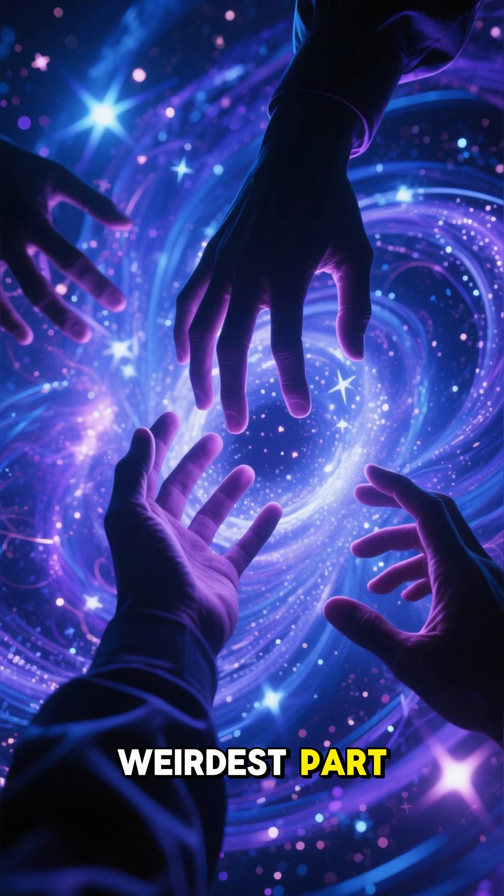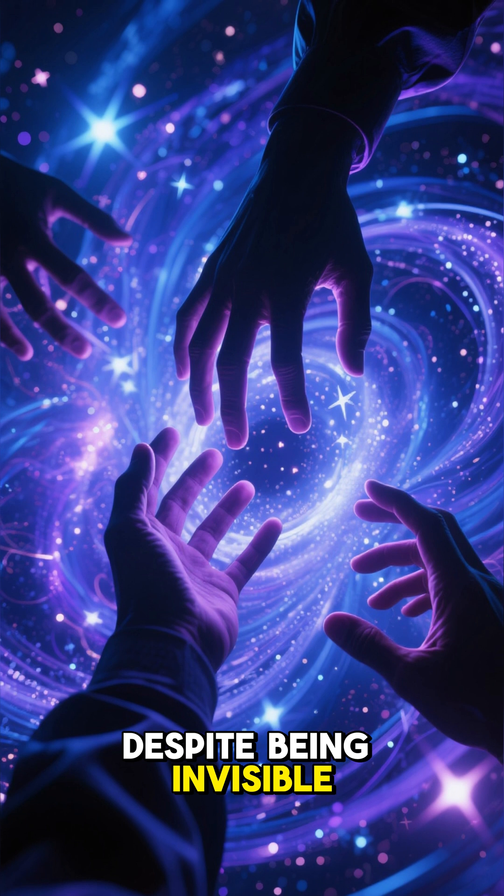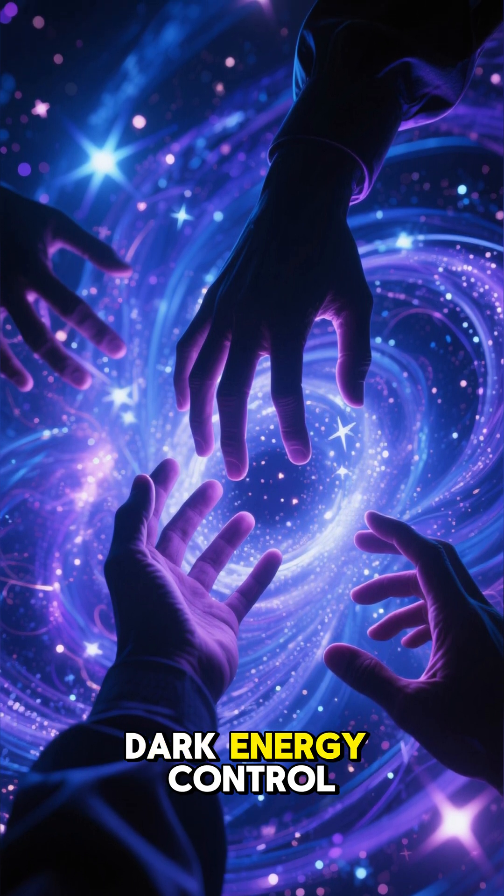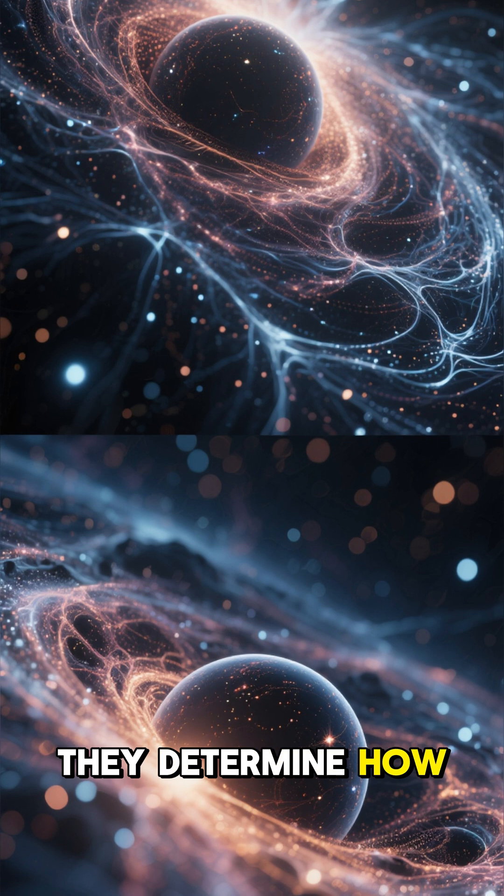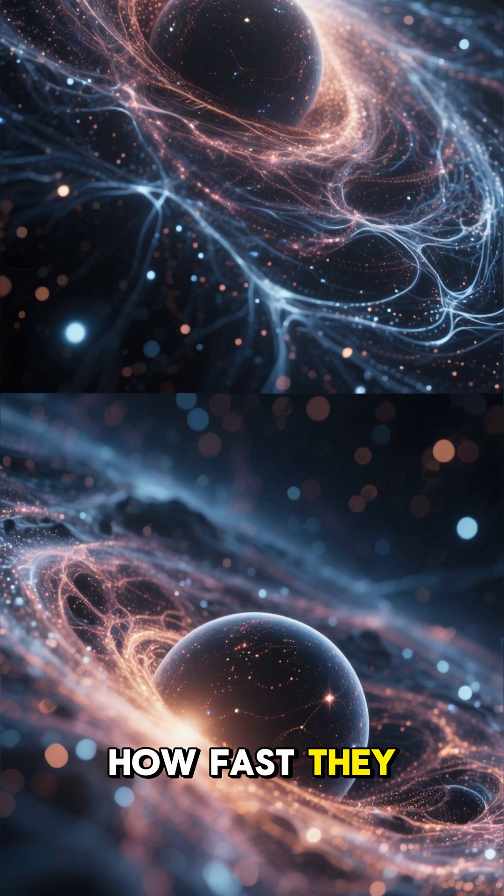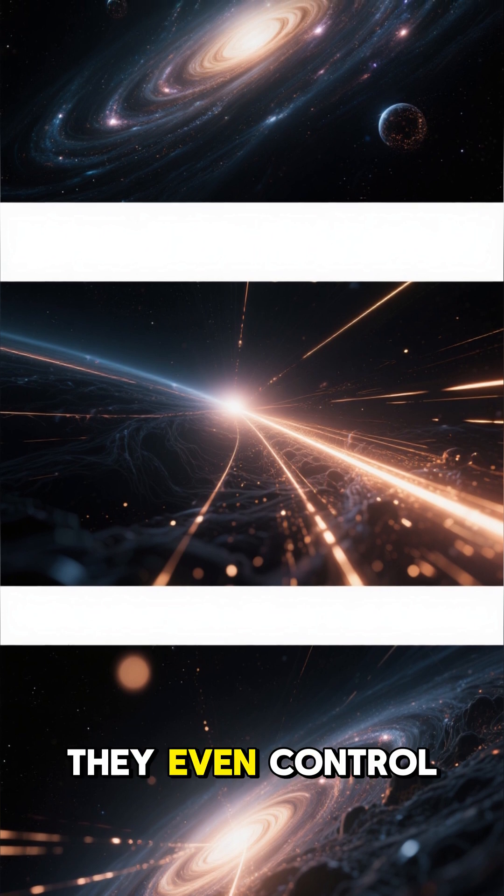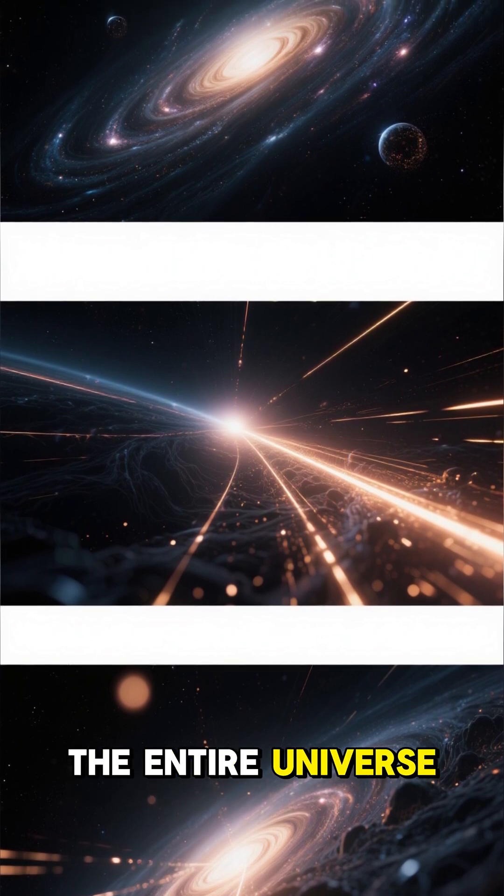But here's the weirdest part. Despite being invisible and intangible, dark matter and dark energy control everything. They determine how galaxies form and how fast they spin. They affect how light travels through space and how gravity works. They even control the fate of the entire universe.